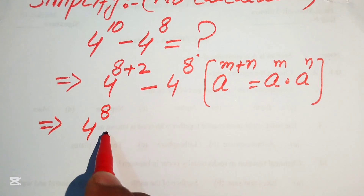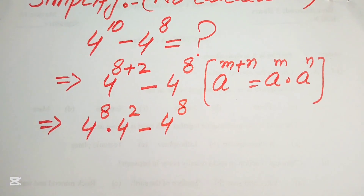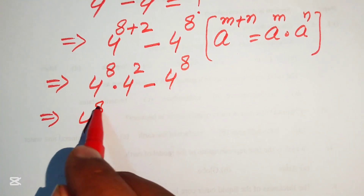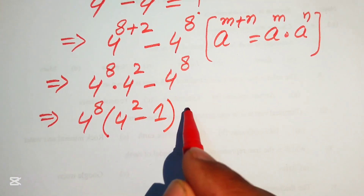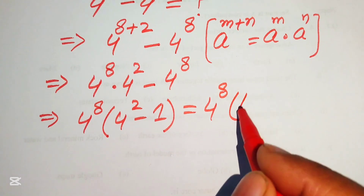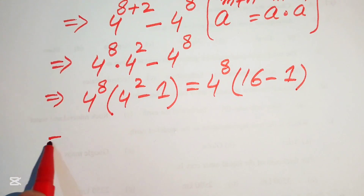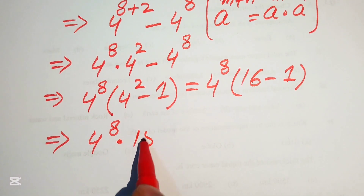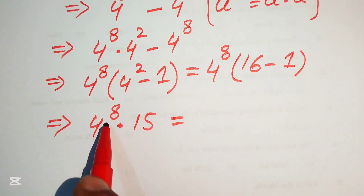According to this exponent law we break the exponent, giving us 4 to the power of 8 multiplied by 4 to the power of 2, minus 4 to the power of 8. We focus on this expression and factor out the common term 4 to the power of 8, obtaining 4 to the power of 8 times (4 squared minus 1), which is 4^8 times (16 minus 1).